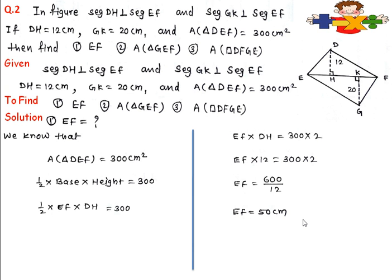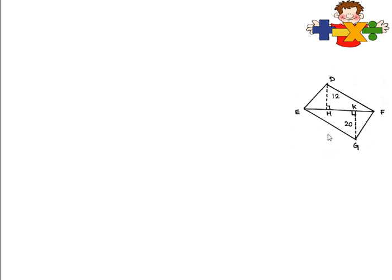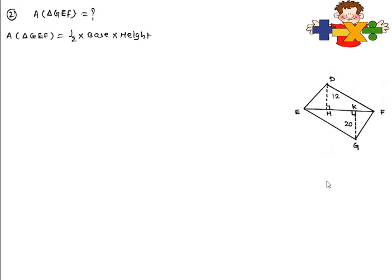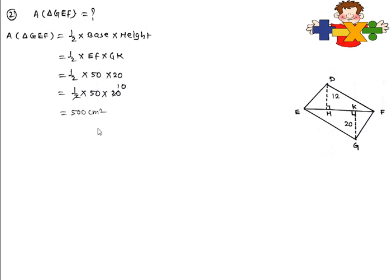Now we find the area of triangle GEF. We have the base EF (which we found as 50) and height GK (which is 20). So the area of GEF equals 1/2 times base times height equals 1/2 times EF times GK equals 1/2 times 50 times 20. Cancelling the 2, we get 10 times 50, which is 500 square centimeters.